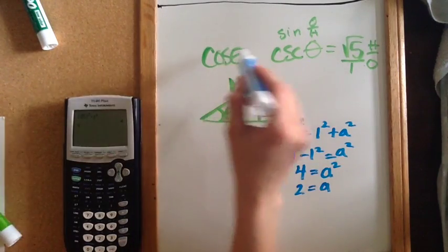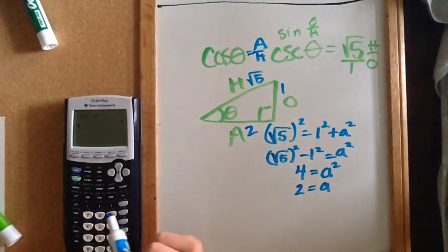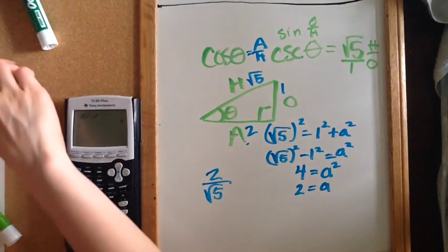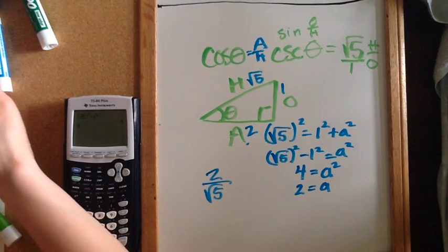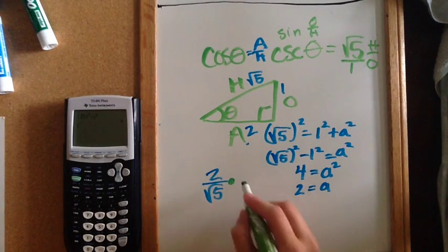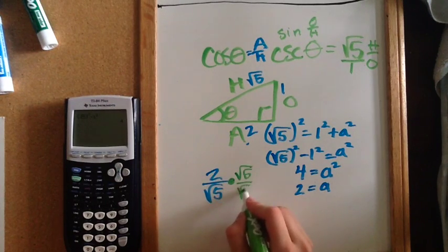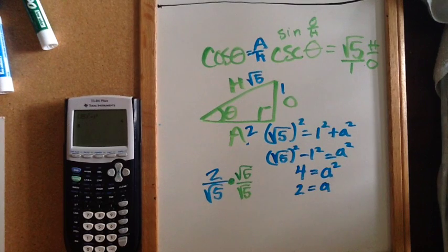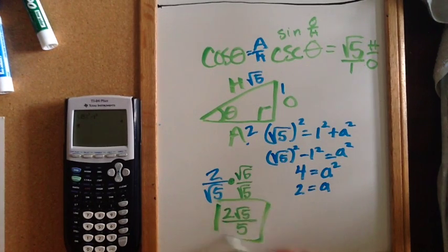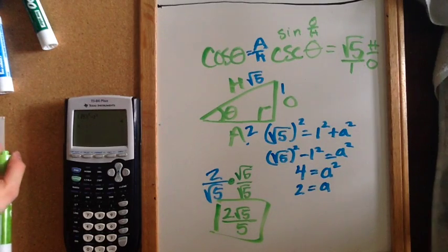Now that I know this side is 2, remember the cosine is adjacent over hypotenuse. So the adjacent over hypotenuse is 2 over √5. But remember, we're not supposed to have roots in the denominator. So I multiply by 1, specifically root 5 over root 5. Multiplying by 1 doesn't change the value — 2 times √5 gives 2√5, and √5 times √5 is just 5. I check if 2 and 5 can be reduced — they can't — so the cosine is 2√5/5.